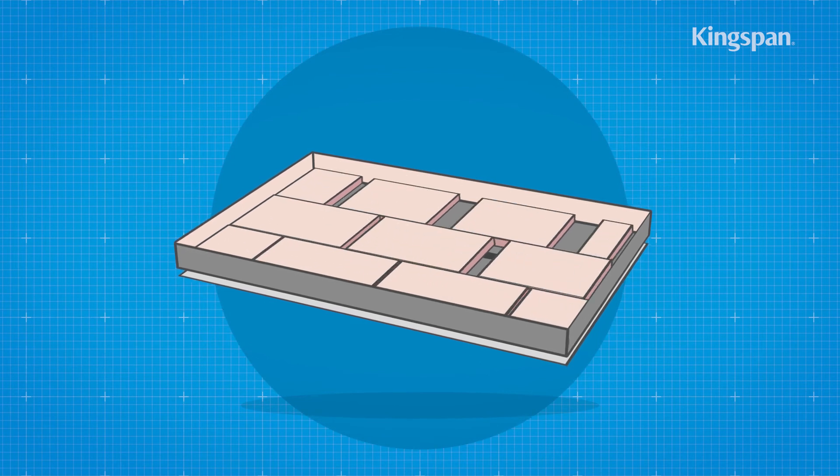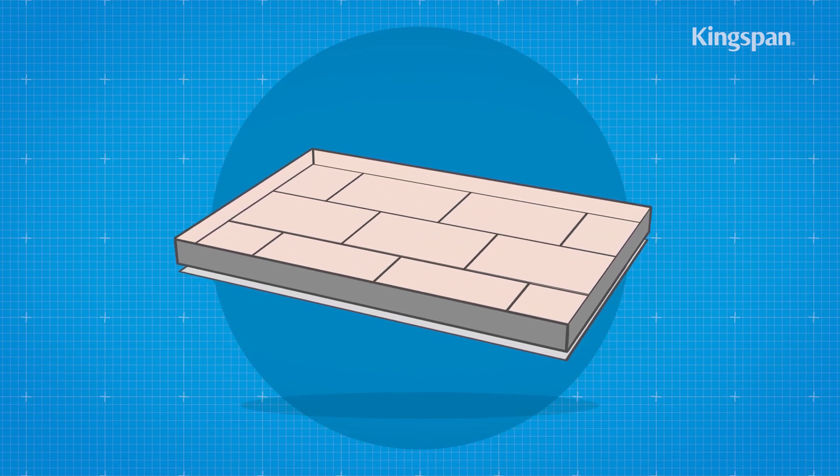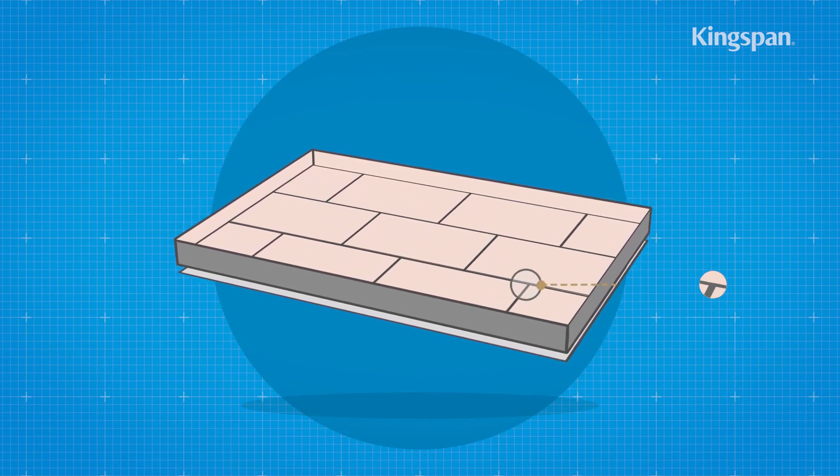The insulation boards should always be loose-laid, break-bonded, with joints lightly butted.